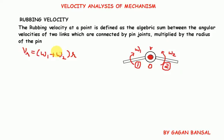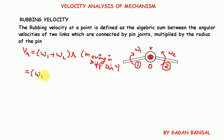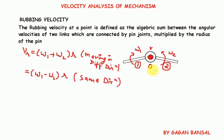This formula applies when the two links are moving in different directions. When they are moving in the same direction, the rubbing velocity is (omega one minus omega two) into r. For the different-direction case: omega one is moving clockwise and omega two is moving anticlockwise, so they have different directions, and the rubbing velocity is (omega one plus omega two) into r.